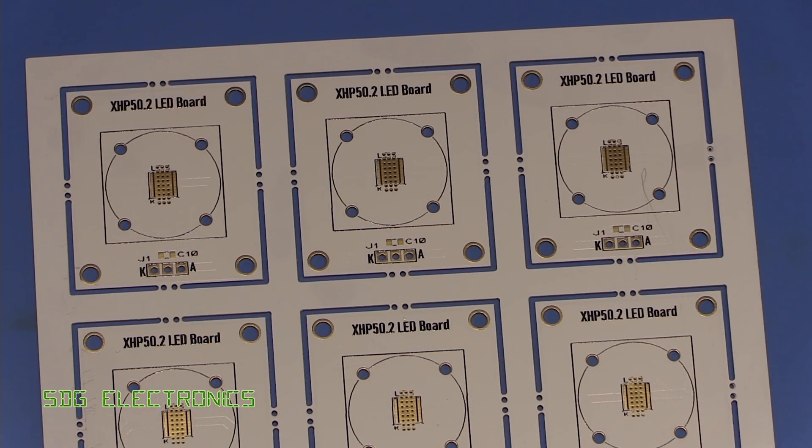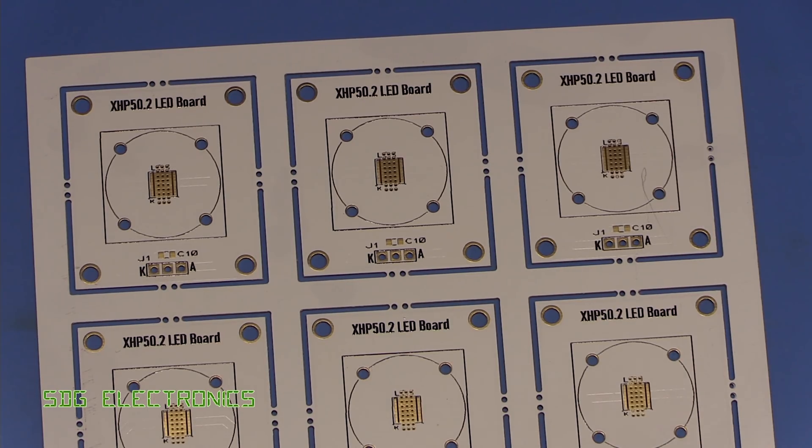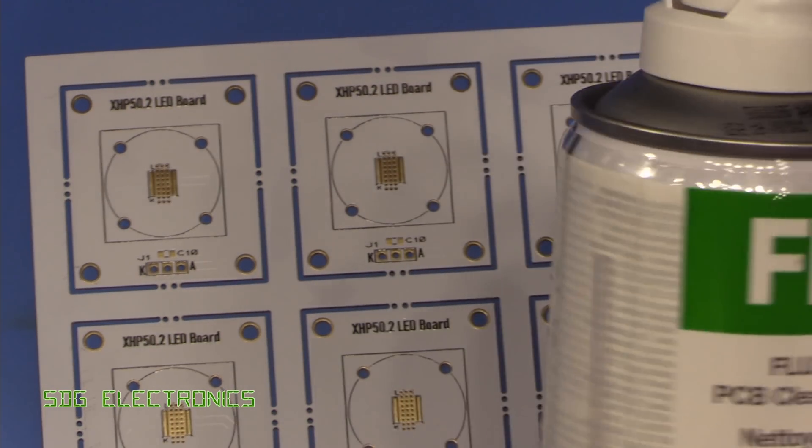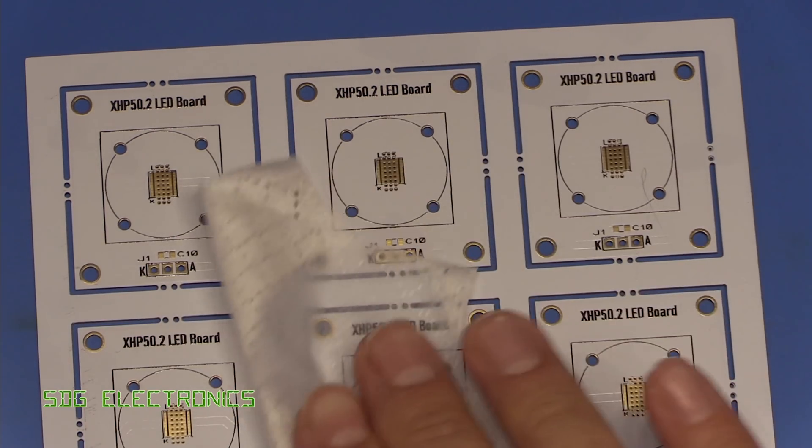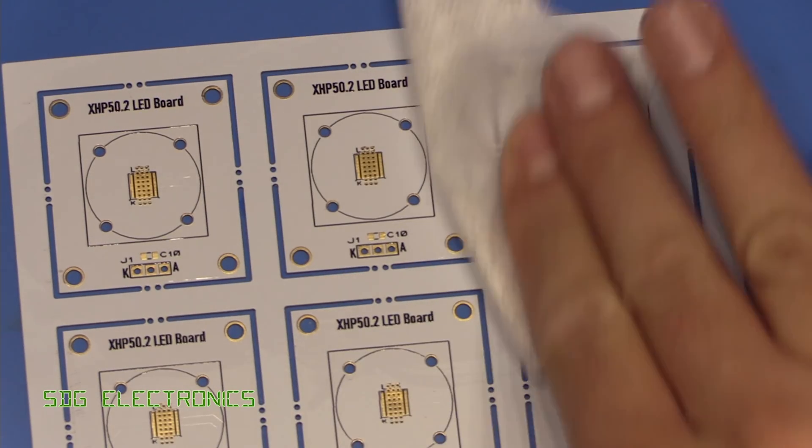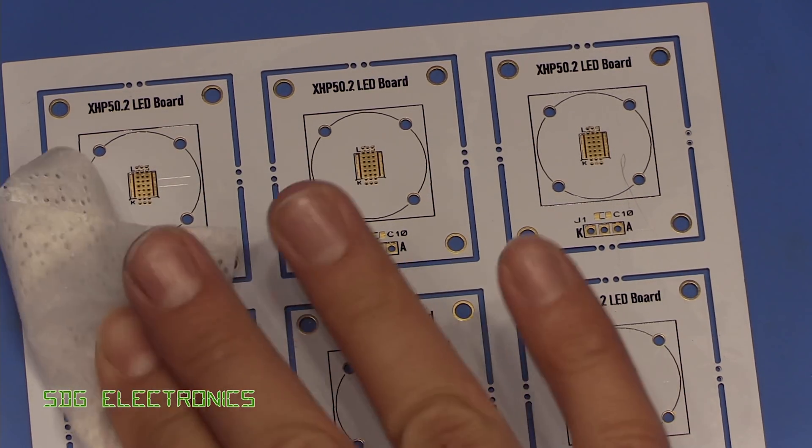Now the first thing that I like to always do with these boards is give them a clean before we do any soldering. So we're going to use some flux clean. And we'll just get it onto a little piece of tissue and just clean up the side that we're going to apply the paste to.